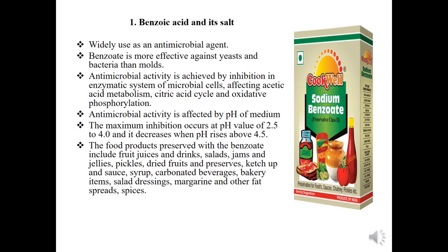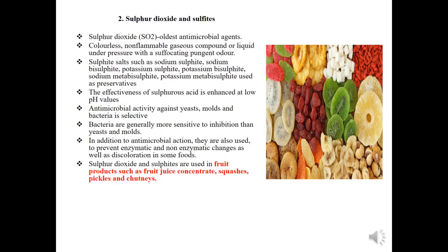Second is sulfur dioxide and sulfates. Sulfur dioxide is one of the oldest antimicrobial agents. It is a colorless, non-flammable gaseous compound or liquid under pressure with a suffocating, pungent odor. Sulfate salts such as sodium sulfate, sodium bisulfate, potassium bisulfate, and sodium and potassium metabisulfate are used as preservatives. The effectiveness of sulfurous acid is enhanced at low pH values. Antimicrobial activity against yeast, mold, and bacteria is selective; bacteria are generally more sensitive to inhibition than yeast and molds. They are also used to prevent enzymatic and non-enzymatic changes as well as discoloration in some foods.